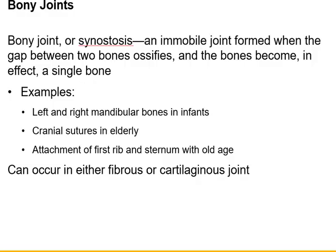Bony joints, or synostoses, usually occur in bones that were held together by fibers. But occasionally you can have a cartilaginous joint that seals off — you fill it in with calcium and phosphorus, ossifying it, turning it to bone.